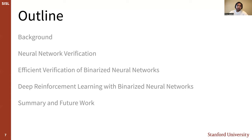This talk will be structured as follows. First, I'll cover some background, including the concept of neural network verification and the challenges it poses. Then I'll talk about efficient verification of binarized neural networks. After that, I'll show how the combination of binarized neural networks and deep reinforcement learning can allow efficient end-to-end verifiable machine learning for autonomous systems. At the end, I'll summarize my contributions and discuss potential avenues for future work.